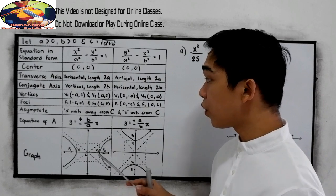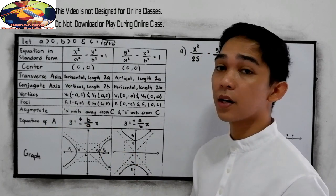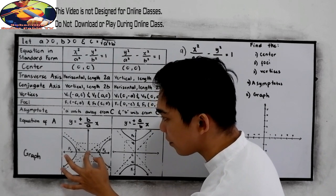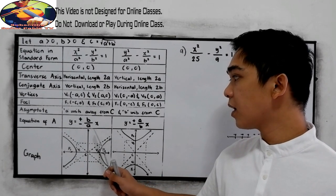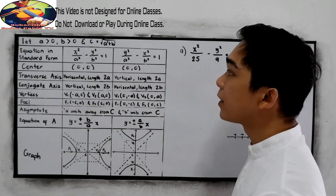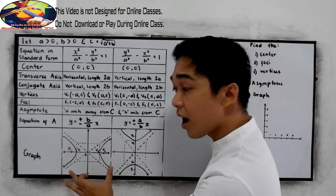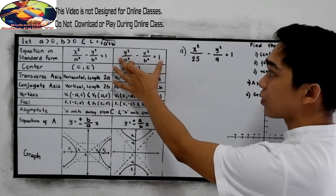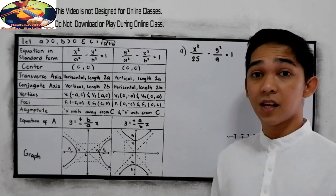For the asymptote, we need to draw a rectangle that is A units away from the center and B units away from the center. The equation of the asymptote is y = ±(B/A)x for the first form, and y = ±(A/B)x for the second form. If your equation is in the first form, the graph opens left and right; if in the second form, the graph opens up and down. Now, to further understand, let's have our first example.